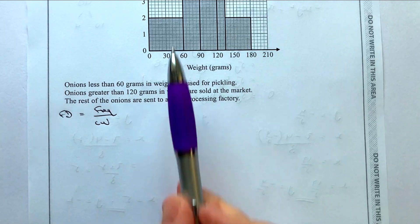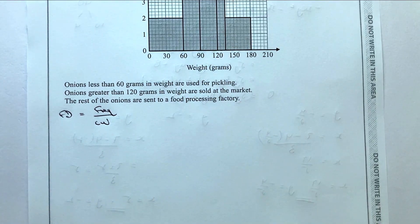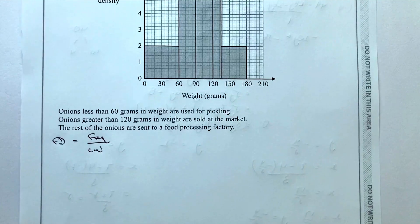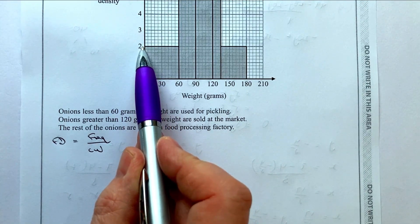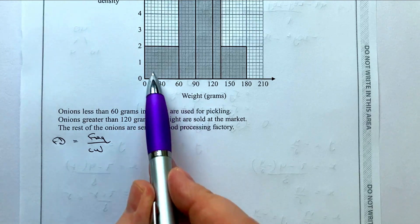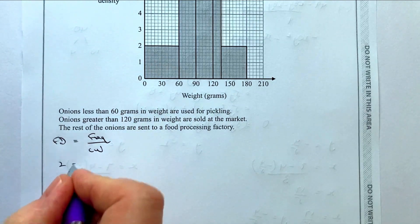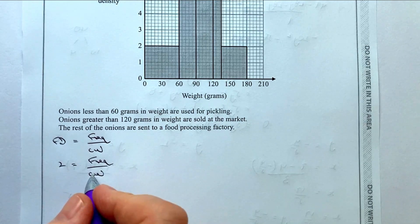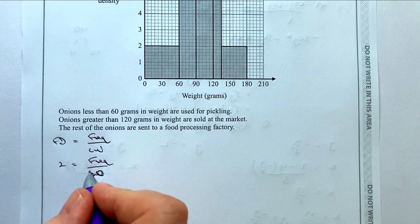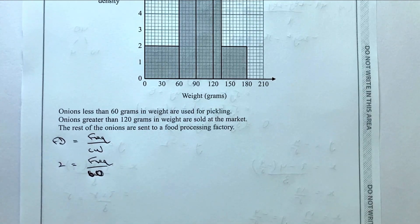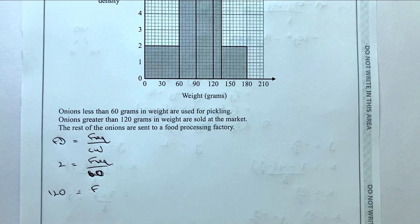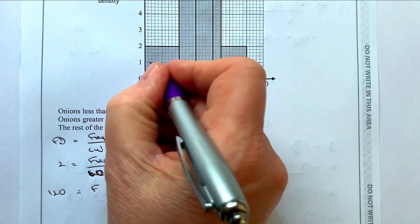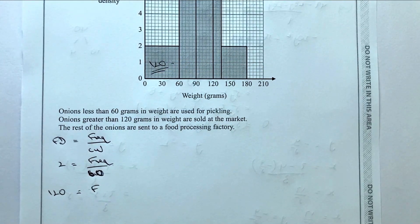We can do that for each block to work out the value of each one. For the first block, we've got a frequency density of 2 and a class width of 60. So: 2 = frequency ÷ 60. Multiplying through by 60, the frequency for that first block is 120 — meaning there are 120 onions represented in that first block.